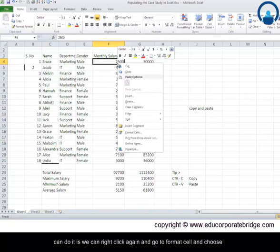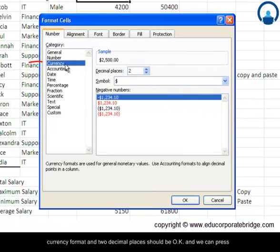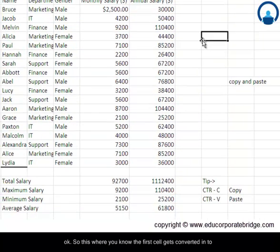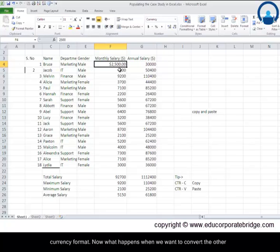The way we can do it is we can right-click again and go to Format Cells and choose currency formats. Two decimal places should be OK, and we can press OK. So this is where the first cell gets converted into currency format.